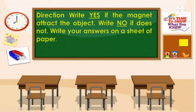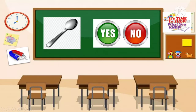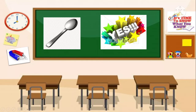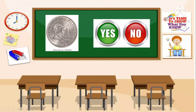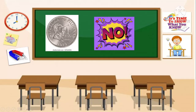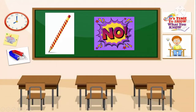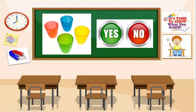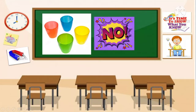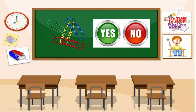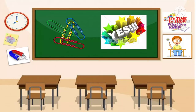Direction: Write yes if the magnet attracts the object, write no if it does not. Write your answer on a sheet of paper. Spoon — yes or no? The correct answer is yes. Coins — yes or no? The answer is no. Pencil — yes or no? The correct answer is no. Plastic cups — yes or no? The answer is no. Paper clip — yes or no? The answer is yes.